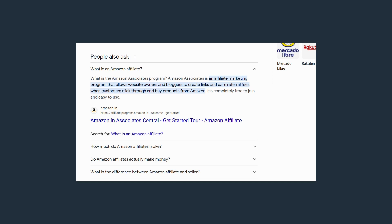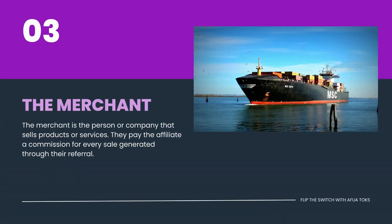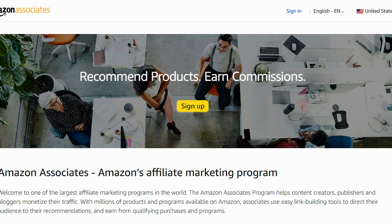Let's talk about the players in affiliate marketing. We have the merchant — the person or company that sells products or services. They pay the affiliate a commission for every sale generated through your referrals. Examples include companies like Amazon, which is very big on affiliate marketing programs. They have a lot of items you can sell — Amazon is a one-stop shop that sells almost everything.